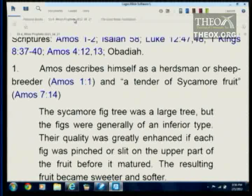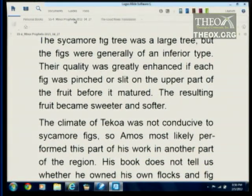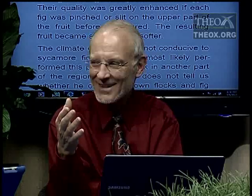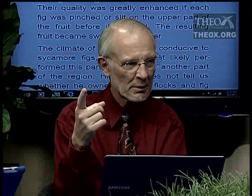Amos describes himself as a herdsman. The term actually means a sheep breeder and a tender of sycamore fruit. If you said someone was a herder and a tender of sycamore fruit, would that describe someone who might be a general conference president? This guy is an ordinary person — very common. He comes from the southern kingdom of Judah, but God calls him to leave his sheep and go up to the northern kingdom of Israel and preach a message to them, because they are about to be taken into Assyrian captivity and scattered to the winds.